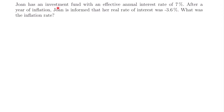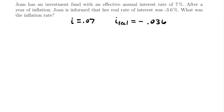For our final example, Joan has an investment fund with an effective annual interest rate of 7%. After a year of inflation, Joan is informed that her real rate of interest was negative 3.6%, meaning her purchasing power decreased by 3.6%. So I is equal to 0.07 and the real rate of interest is equal to negative 0.036. To find the inflation rate, we use the formula for the real rate of interest and solve for R: the real rate of interest equals I minus R divided by 1 plus R.